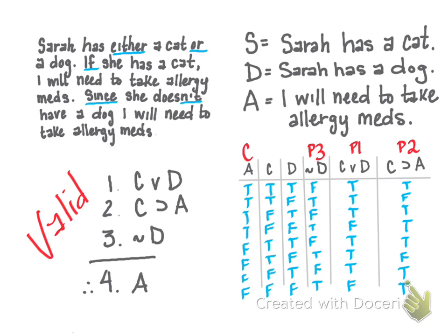So here we go. If you were to go through this whole exercise, you'd identify the atomic statements here, S, D, and A. You'd put it into standard form, fully translate into the symbolic notation, and then we can set up a truth table to prove that this argument is valid.